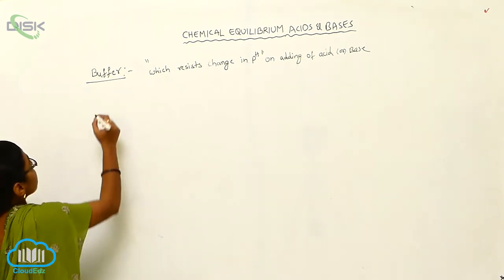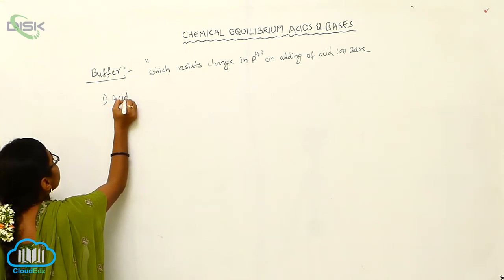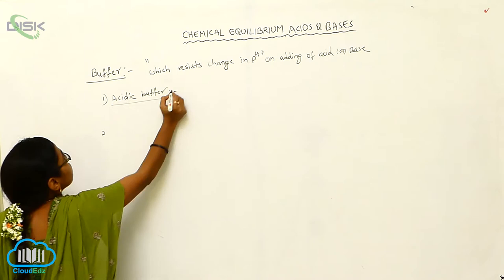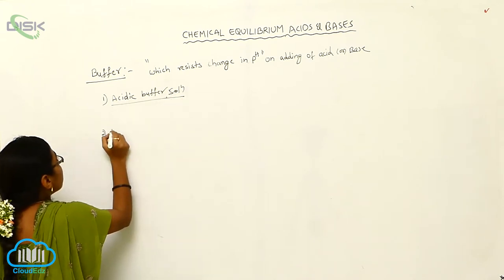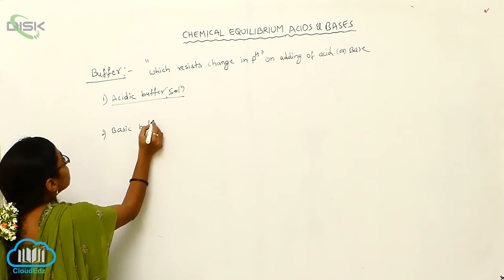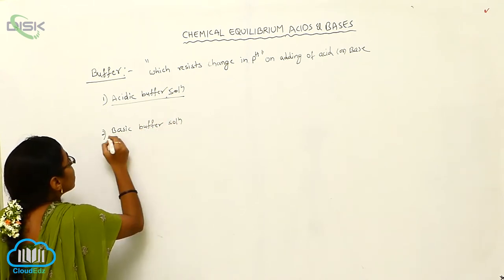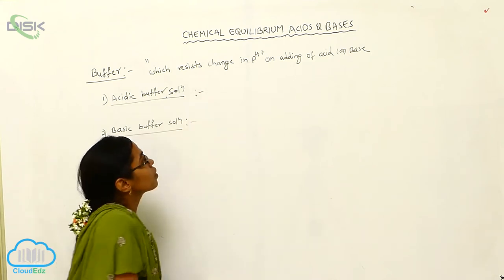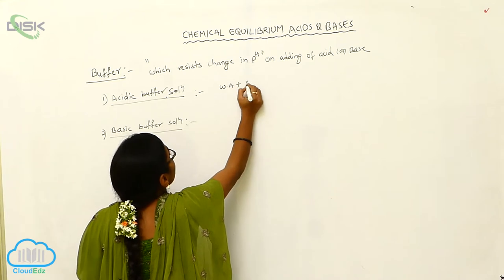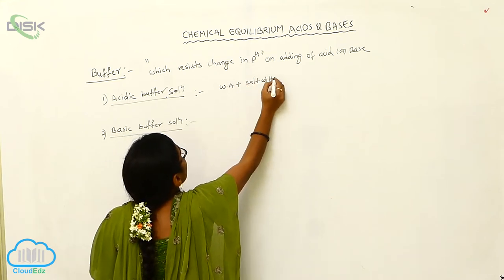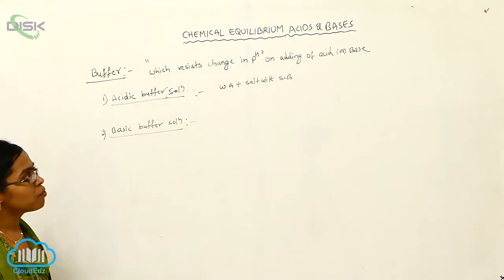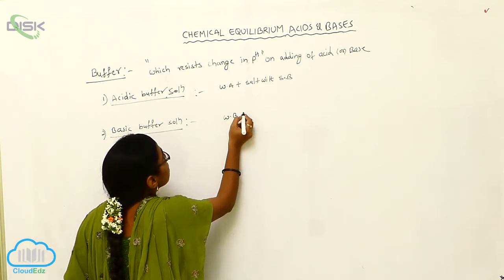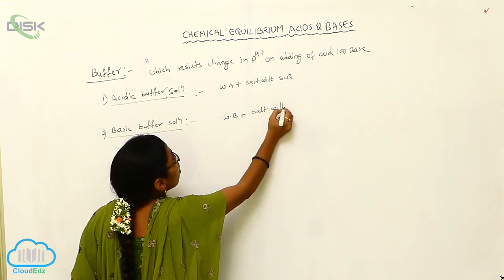Buffers are of two types. Number one is the acidic buffer solution, and number two is the basic buffer solution. Acidic buffer solution is the combination of a weak acid and a salt with a strong base. Basic buffer is the combination of a weak base plus a salt with a strong acid.